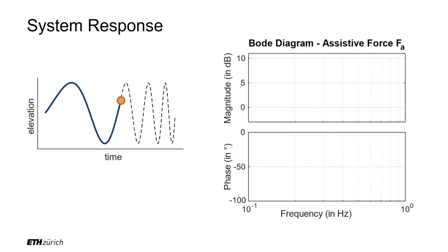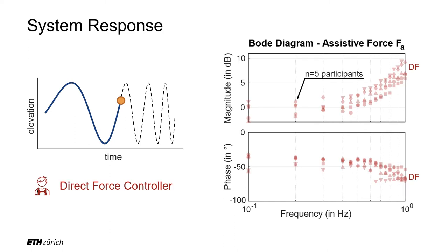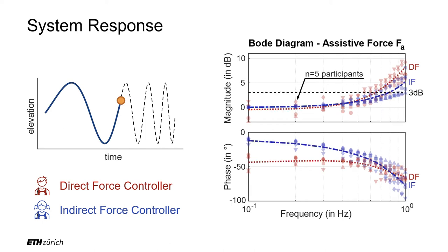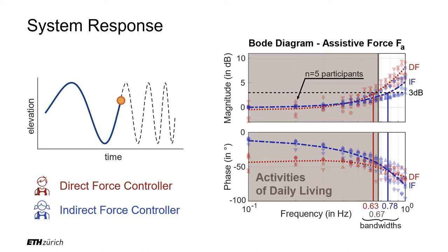When comparing the system response for both controller types, the direct force controller and the indirect force controller caused increasing interaction forces when the participants moved with increasing frequency. Applying a three decibel cutoff frequency criterion, the indirect force controller had a higher bandwidth than the direct force controller, with only the latter covering the bandwidth requirements for activities of daily living.